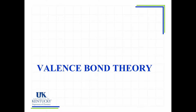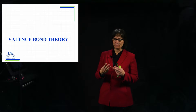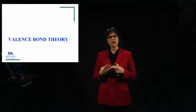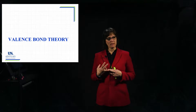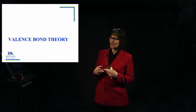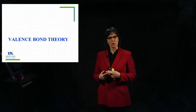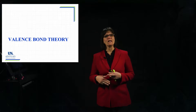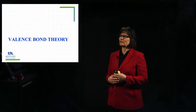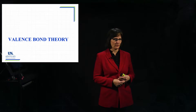At the beginning of the previous chapter, I introduced three ways of looking at bonding: Lewis theory, valence bond theory, and a third called molecular orbital theory. So we're ready to start this discussion of valence bond theory.